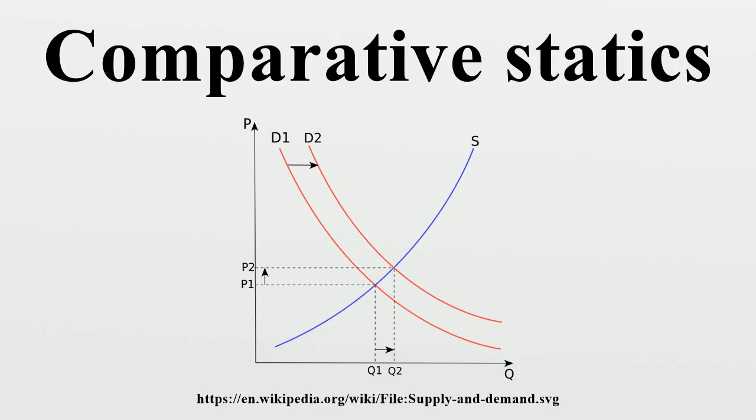The assumption that the equilibrium is stable matters for two reasons. First, if the equilibrium were unstable, a small parameter change might cause a large jump in the value invalidating the use of a linear approximation.